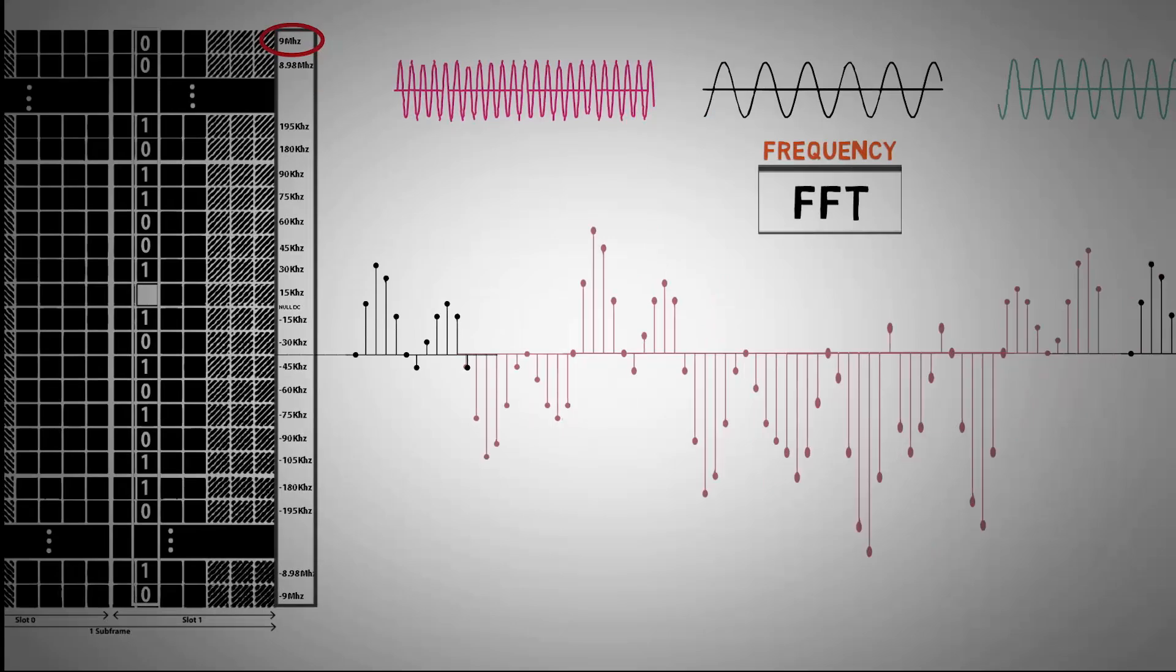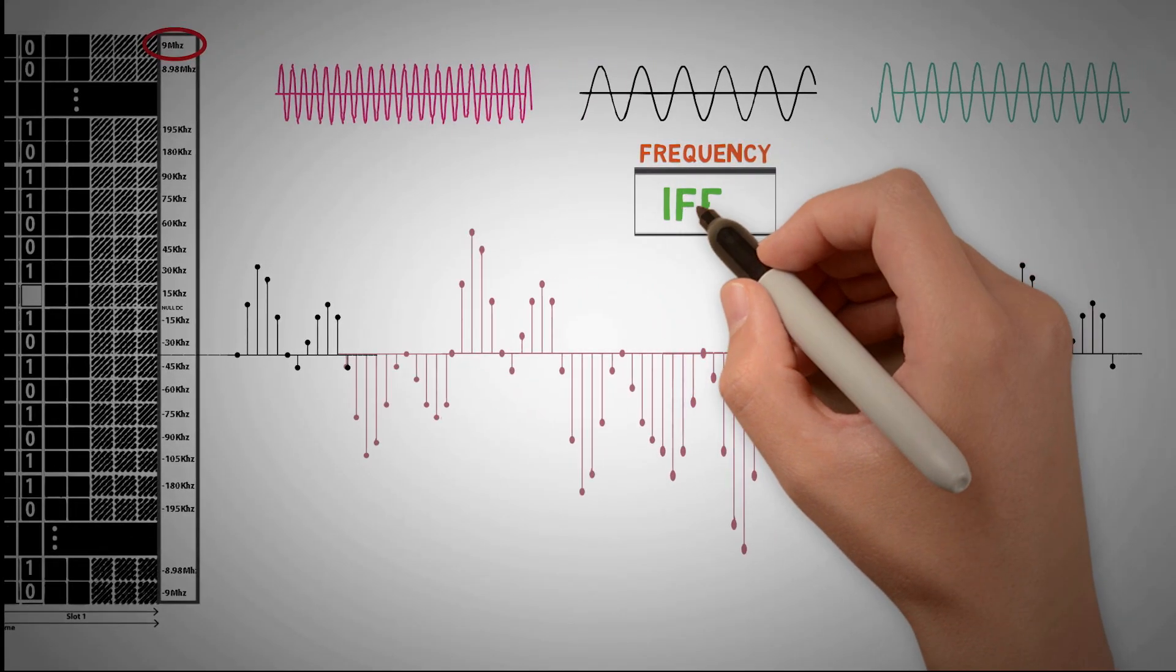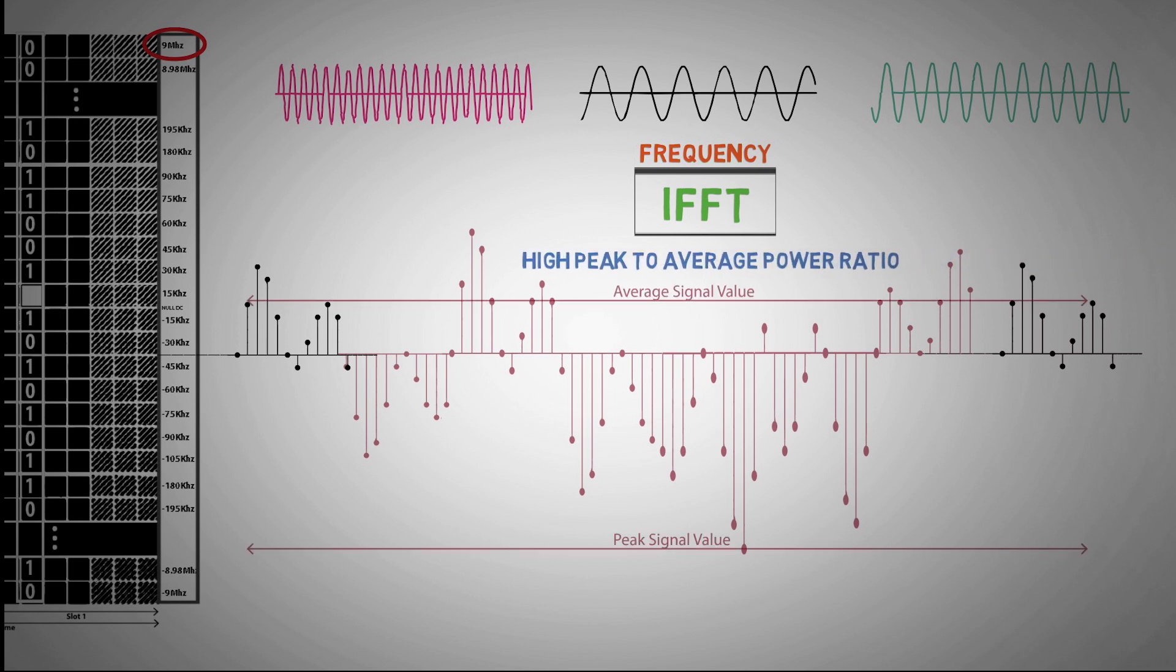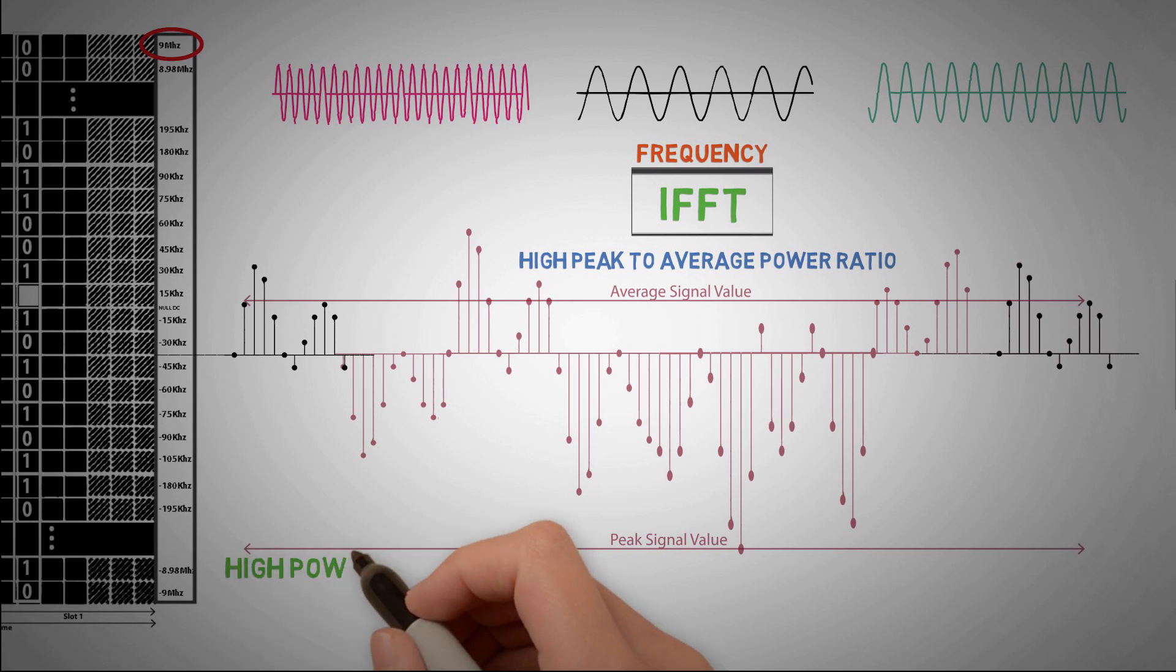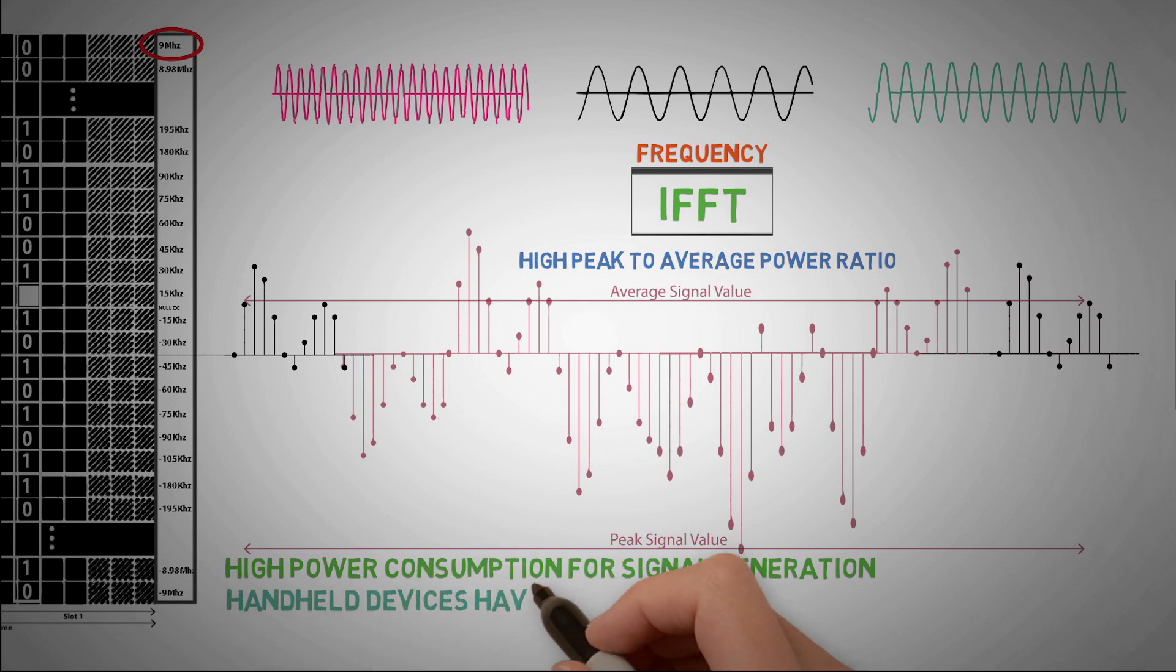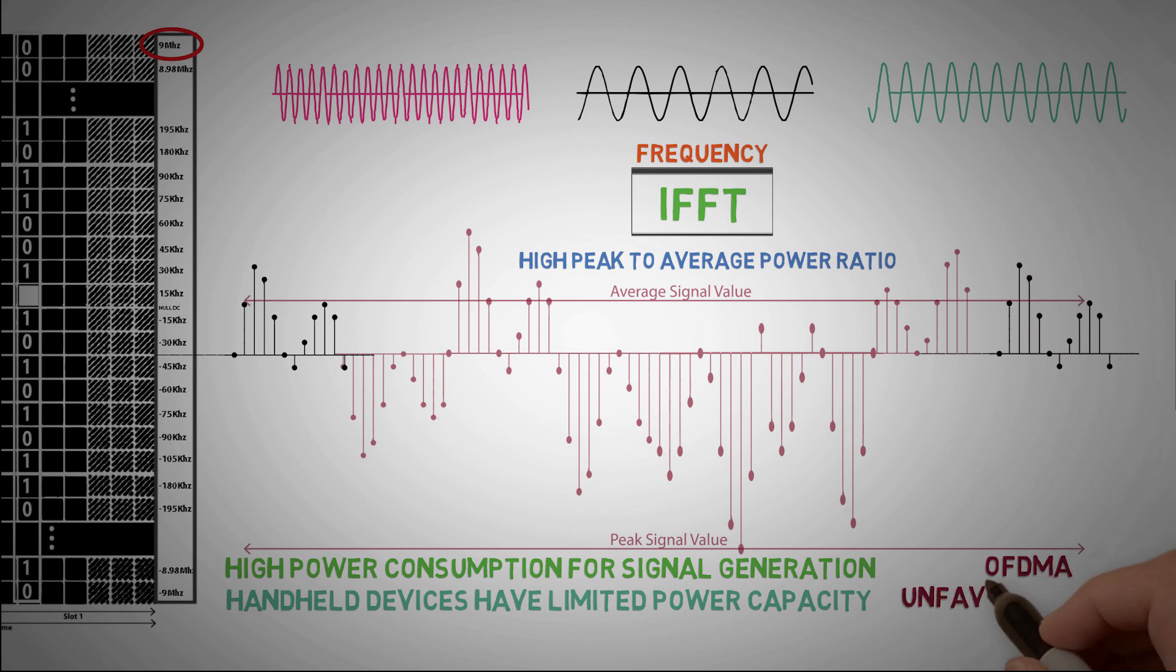Although there are many positives in OFDMA, IFFT summation of multiple parallel subcarriers results in high peak to average power ratio. High PAPR results in high power consumption for signal generation. But handheld devices have limited power capacity. This makes OFDMA unfavorable for uplink transmission.